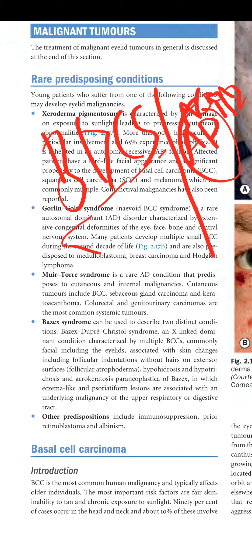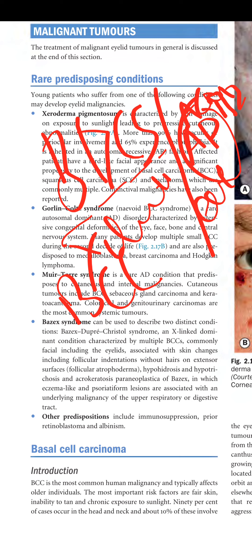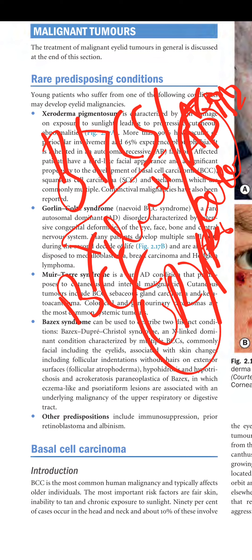The second type is acrokeratosis paraneoplastica of Bazex, in which eczematous and psoriasiform lesions are associated with underlying malignancies of the upper respiratory or digestive tract. So Bazex syndrome is divided into two types: Bazex-Dupré-Christol syndrome with multiple BCC, hair follicle problems, hypohydrosis and hypotrichosis; and acrokeratosis paraneoplastica of Bazex with skin changes and associated visceral malignancy.